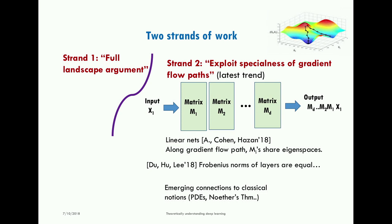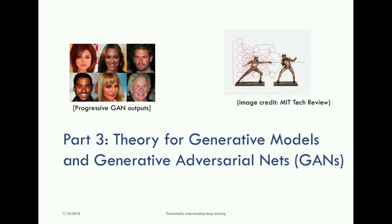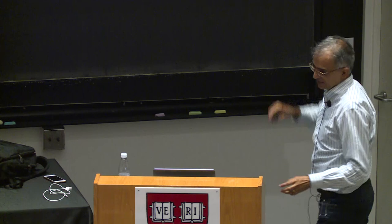The last topic is generative models and generative adversarial networks (GANs). The images on the left were generated by a deep net trained on celebrity photos and learned to generate images of people who have never existed. This technique is called generative adversarial nets, sometimes called 'dueling AIs' in popular press.